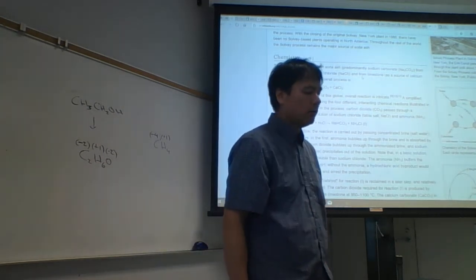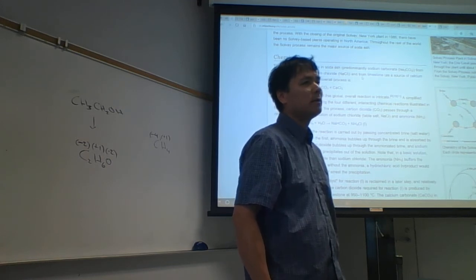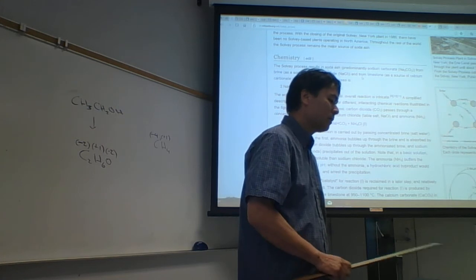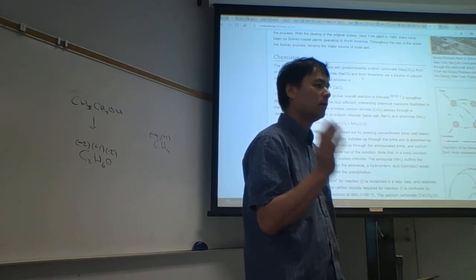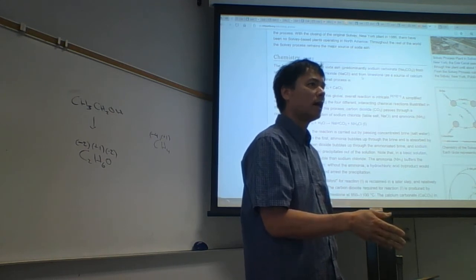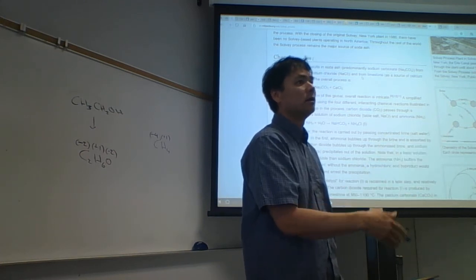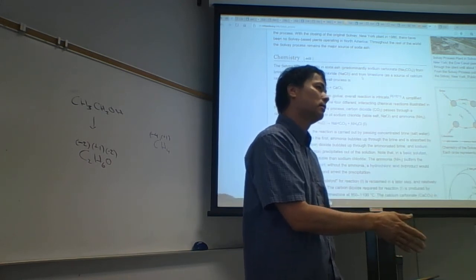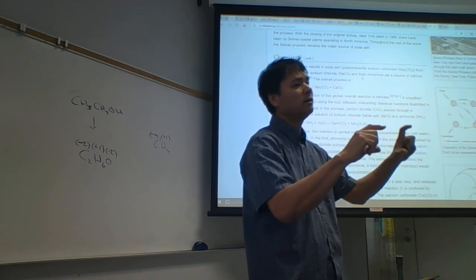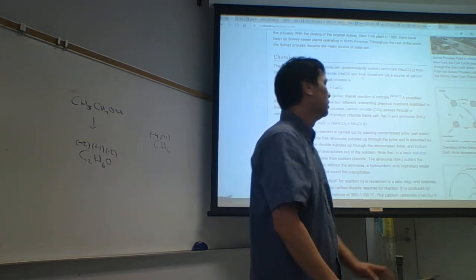Sodium chloride is used in the Solvay process to produce sodium carbonate and calcium chloride. The reaction is: NaCl + CaCO₃ → Na₂CO₃ + CaCl₂. We can go reaction by reaction and try to memorize, but is that an effective way to learn chemical properties? How many different substances could you react sodium chloride with? Seemingly infinite. So we have to break it down into simpler categories of reaction rather than memorizing each one.